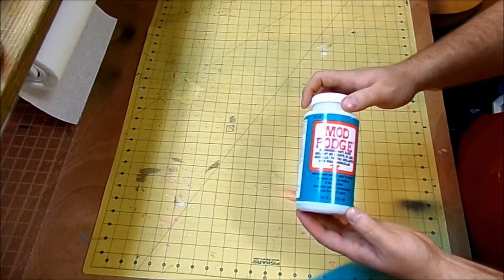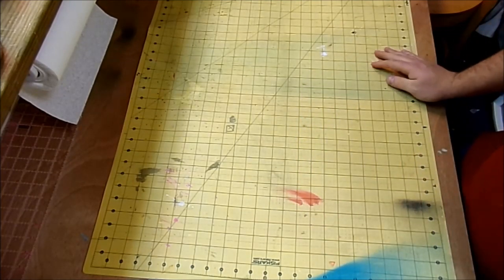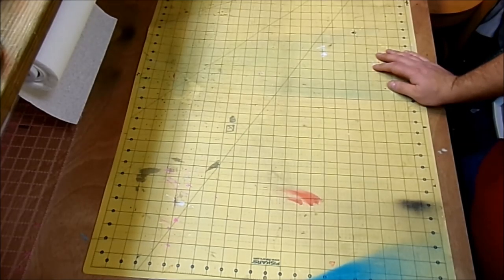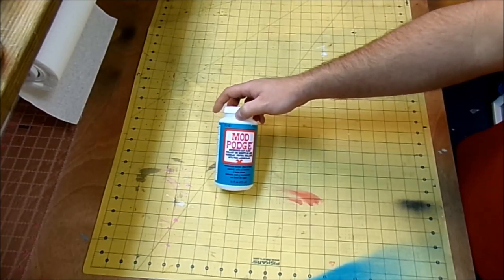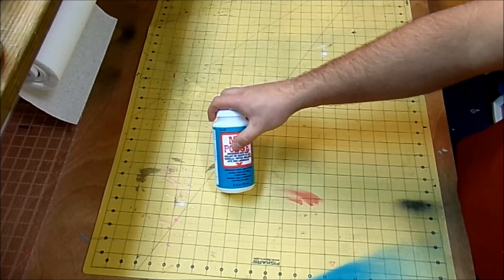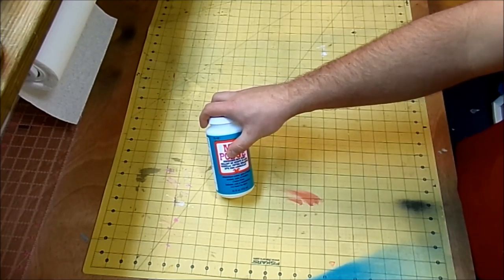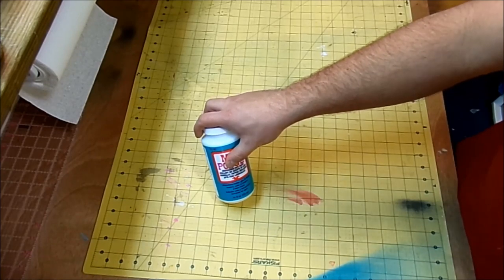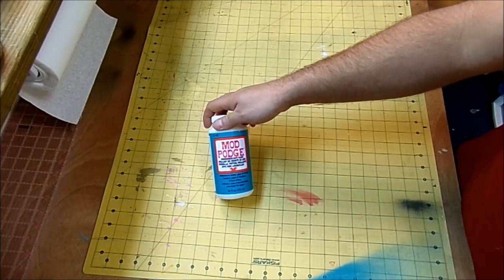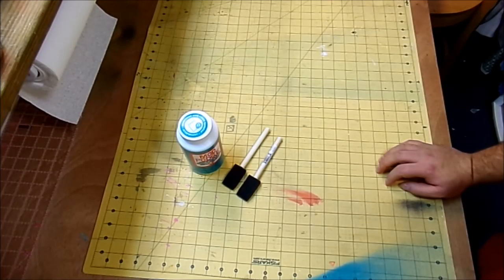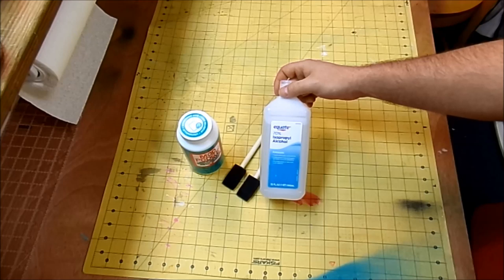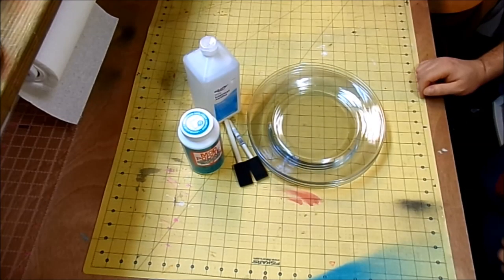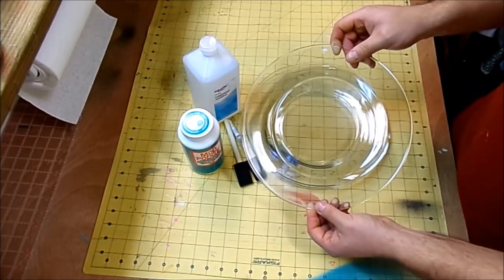The things that you're gonna need to make these holiday cookie plates are some Mod Podge. I'll be using the dishwasher safe stuff but you can go ahead and just use the regular Mod Podge, it just will not be washable. You can wipe the top of the plate off with a damp towel but you don't want to get the back wet. You'll need some foam brushes, some rubbing alcohol to clean any fingerprints or grease off of our glass plates.